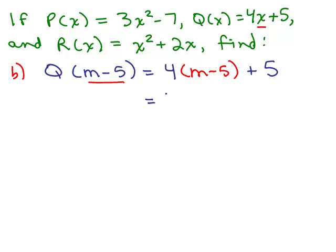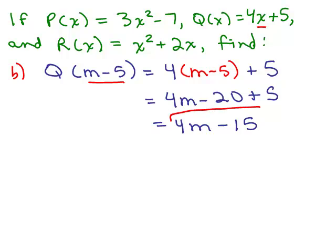So now I just do the distributive property and simplify by combining like terms, and that's our answer, 4m - 15.